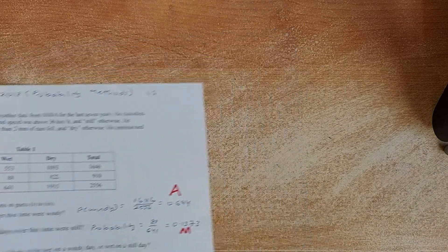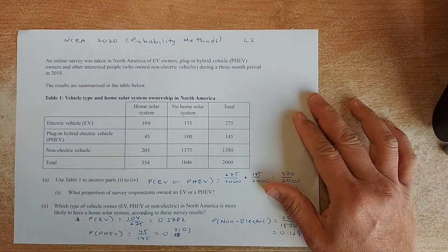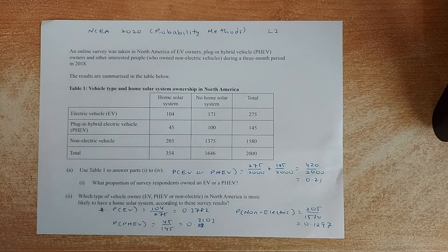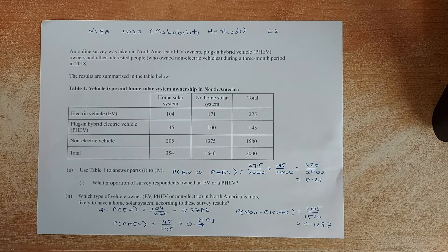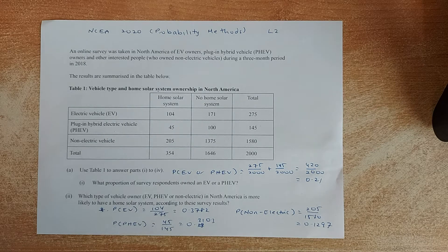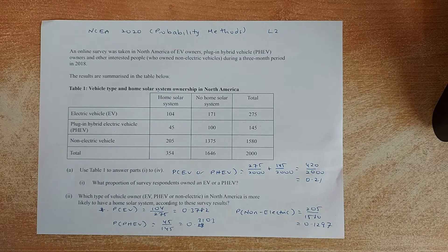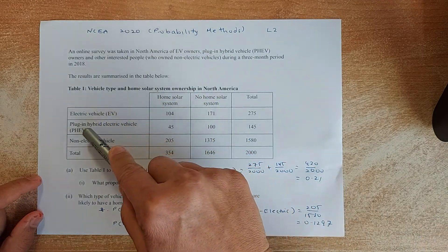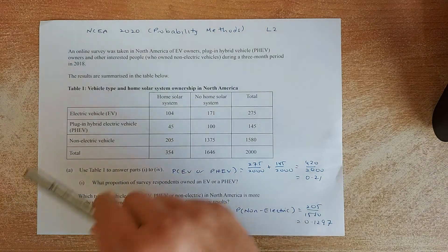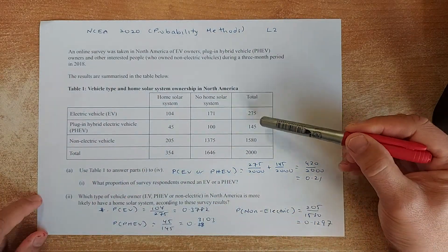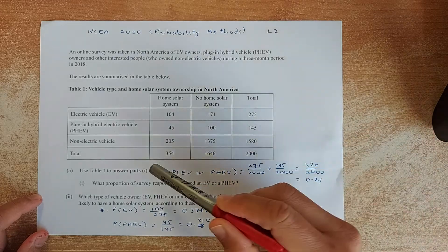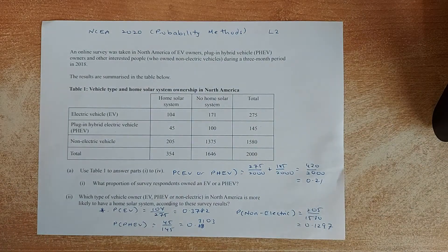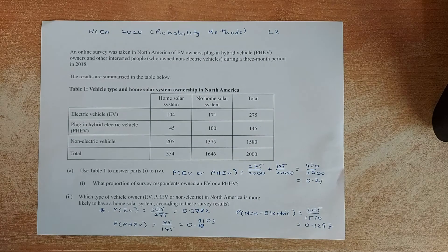So now we shall look at the last question, that is last year's NCEA probability method level 2 again. An online survey in North America of EV owners, plug-in vehicles and other interested people during a 3-month period in 2018. The results were summarized below. Either you have a home solar system or no solar system and divided into EV, PHV and non-electric vehicles. And the table is all calculated, the row total is calculated, the row total is calculated, and the column total is calculated. And the total number of people surveyed is 2,000. So once we have done that, we are going to answer the question.